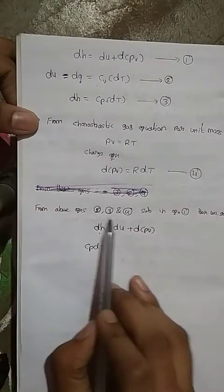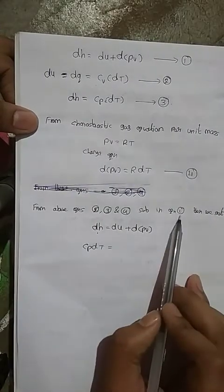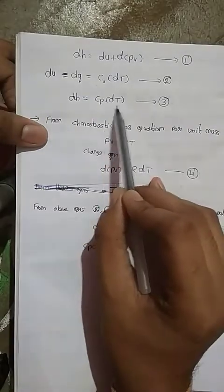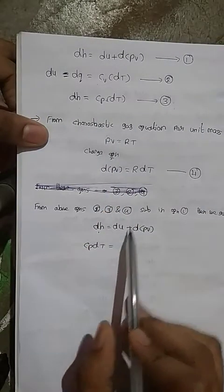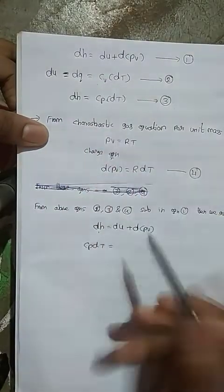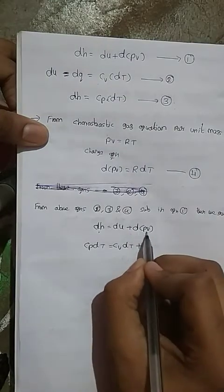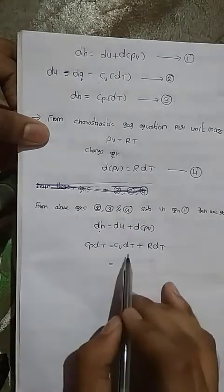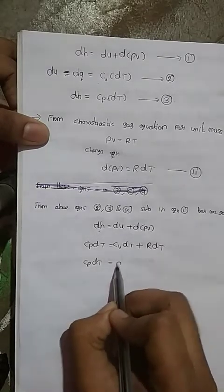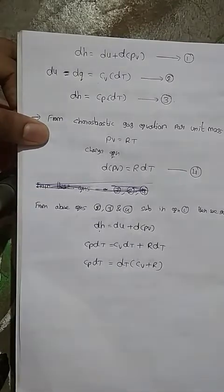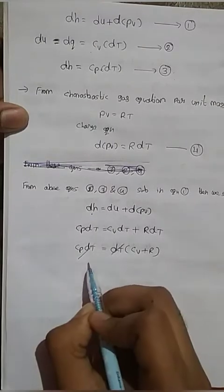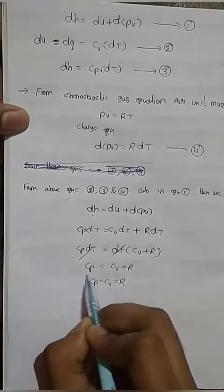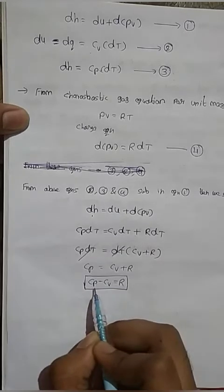Now substituting equations 2, 3, and 4 into equation 1: dH = dU + d(PV). From equation 3, dH = Cp·dT. From equation 2, dU = Cv·dT. From equation 4, d(PV) = R·dT. So we get Cp·dT = Cv·dT + R·dT. Since dT is common, cancelling dT throughout gives Cp = Cv + R. This is the required relationship between the specific heats and the characteristic gas constant.